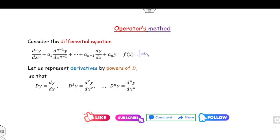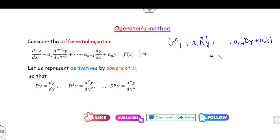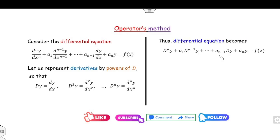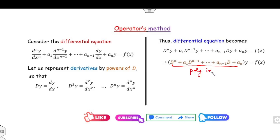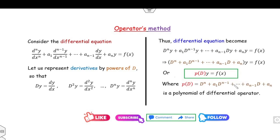If we substitute all these values into the given equation, the expression becomes D raised to power n times y, plus a1 times D raised to power n minus 1 times y, plus so on, and the last expression is a(n-1) times Dy plus an times y equals f(x). Taking y as common, this becomes a polynomial in capital D applied to y, equal to f(x). So we write P(D) y equals f(x), and therefore y equals 1 over P(D) times f(x).